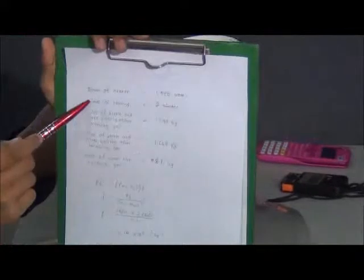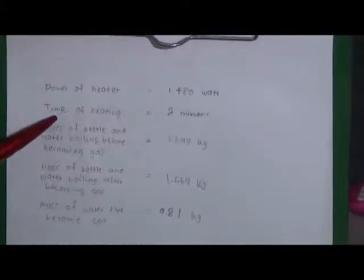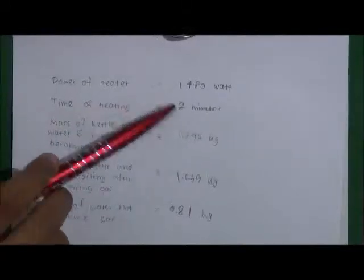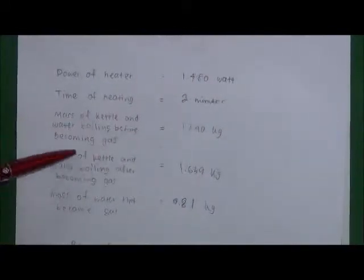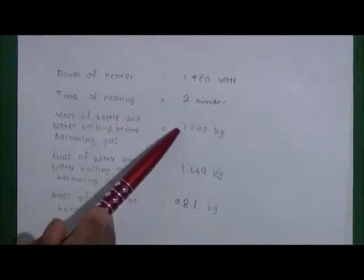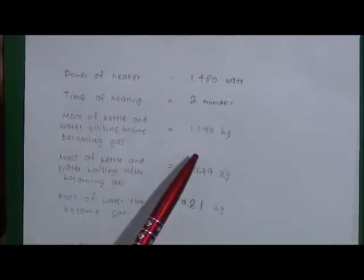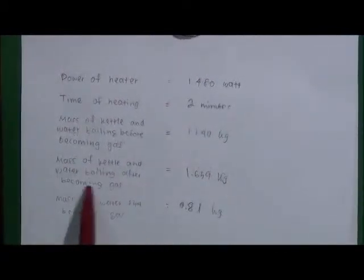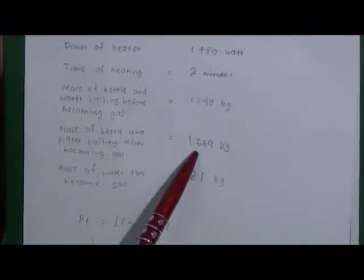So, the power of the heater is 1480 watts. Time of heating is 2 minutes times 60 seconds. Mass of kettle and water before boiling: 1.74 kilograms. Mass of kettle and water after boiling: 1.659 kilograms.